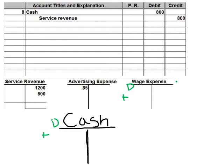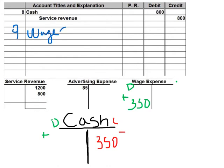We're paying out cash, so we're decreasing cash — that's a credit of $350. Wage expense increases with a debit of $350. The journal entry for number nine: debit wage expense $350 and credit cash $350.